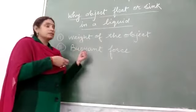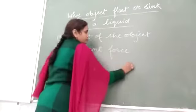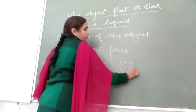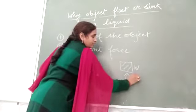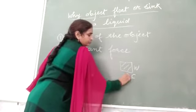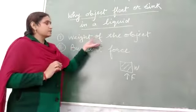Now how will we be able to determine this? If we consider a body having weight W and buoyant force working on the body F. F is equal to ρVg. Now if we consider both these things.